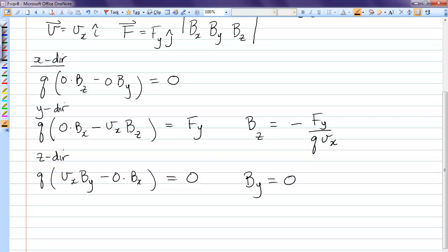We come to the conclusion that By is 0, Bz has a value, but Bx can be anything.